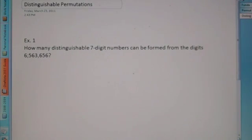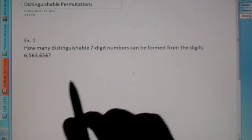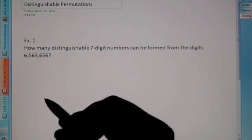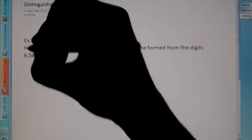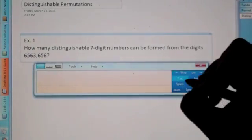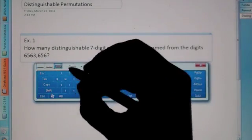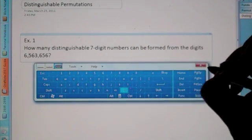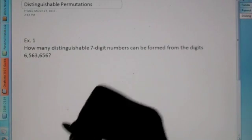So our first example says, how many distinguishable seven-digit numbers can be formed from the digits? Oops, there's a little typo there. Six million, five hundred sixty-three thousand, six hundred fifty-six. Okay?